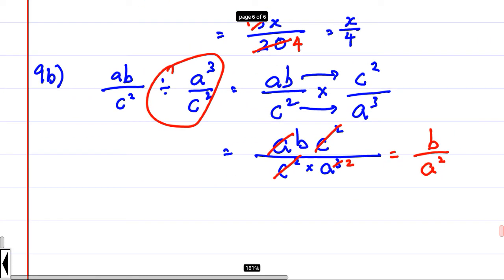One more. Last one. 9c. I want to calculate. I want to have 3x over 4 minus 2x over 3.